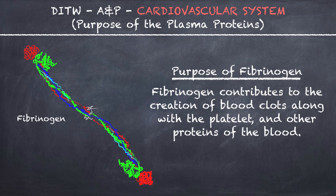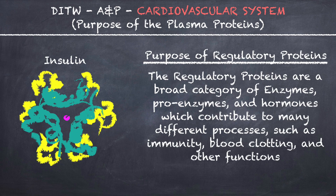Fibrinogen contributes to the creation of blood clots along with platelets and other proteins of the blood. The regulatory proteins are a broad category of enzymes, proenzymes, and hormones which contribute to many different processes such as immunity, blood clotting, and other functions.